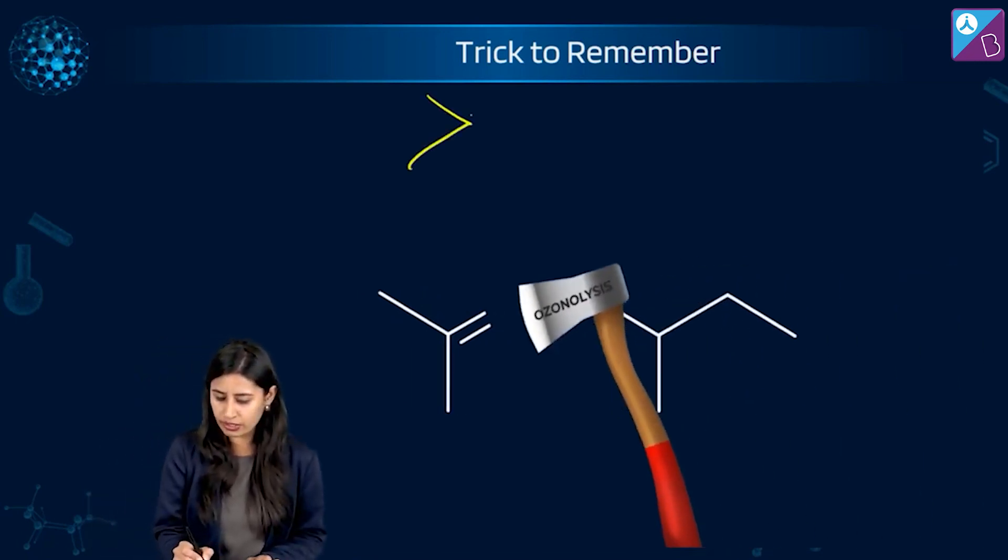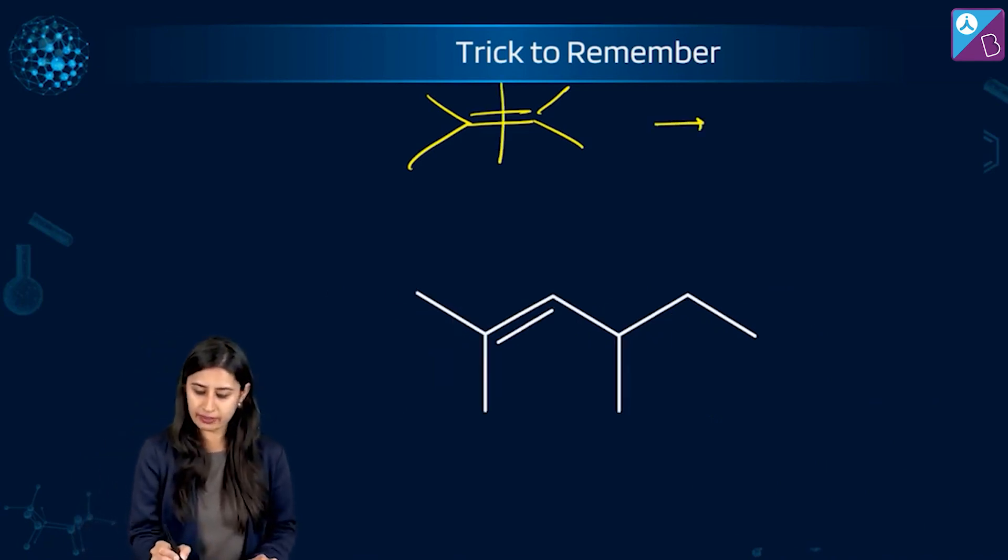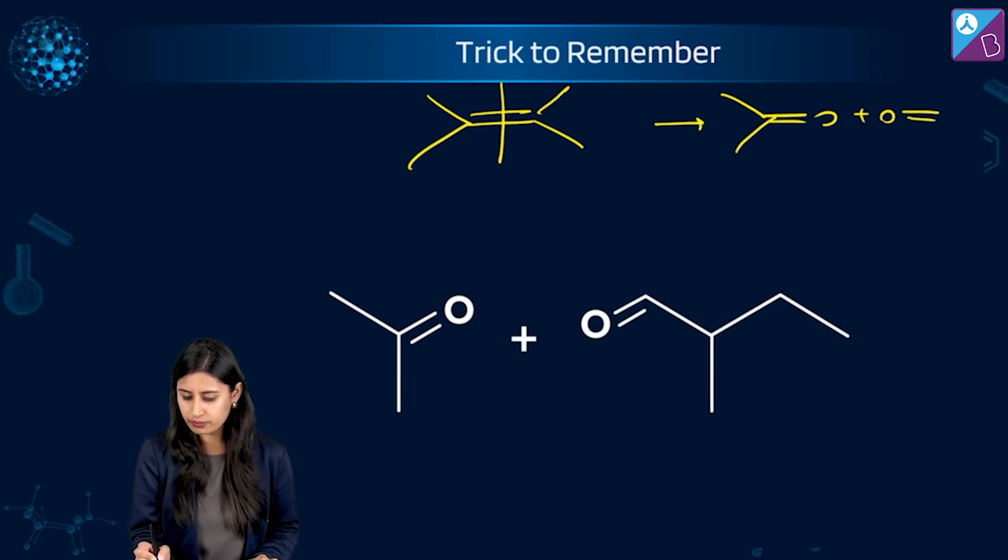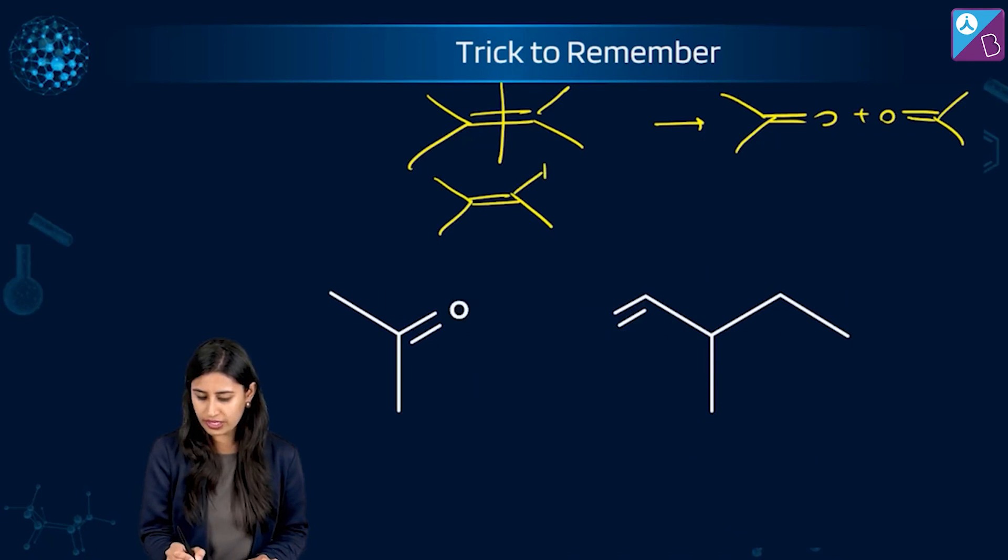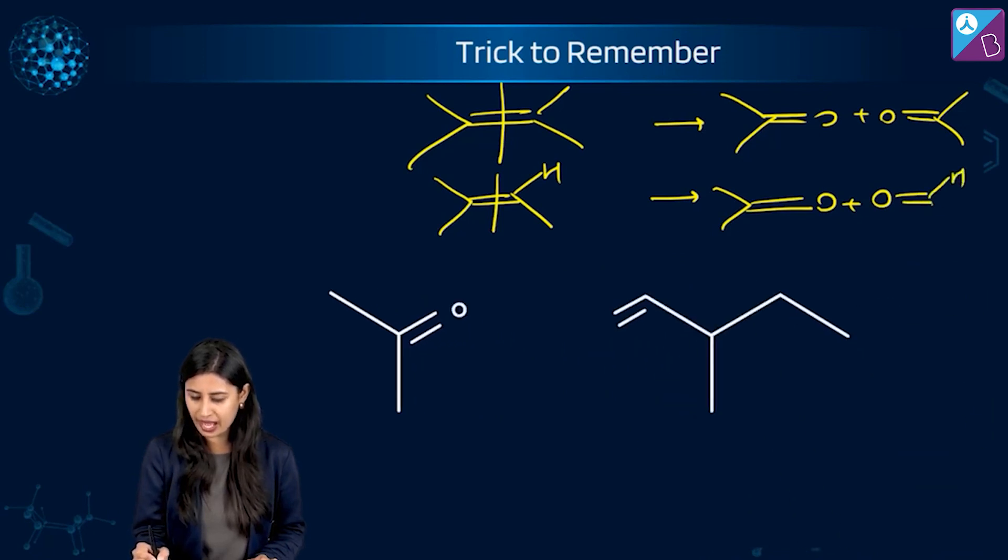What if it is only this kind of a thing? Break it, put two oxygens. What if it is this? Only one hydrogen here. Cleave it, break it, put oxygen in between. As simple as that.